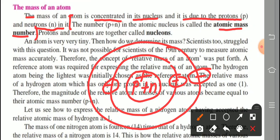The definition of atomic mass number: the sum of the number of protons and neutrons in the atomic nucleus is called the atomic mass number. Atomic mass number is indicated by the symbol capital A.